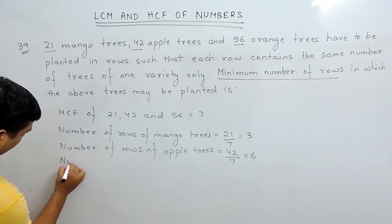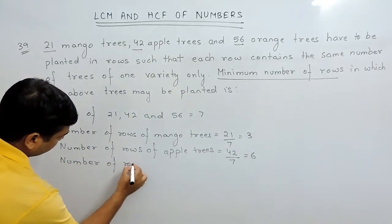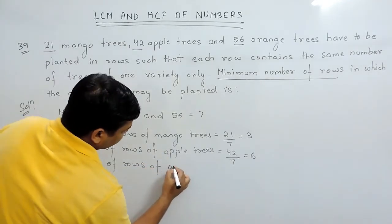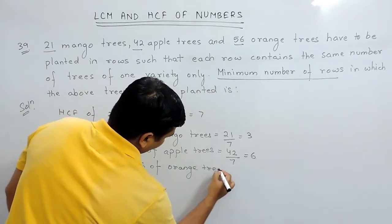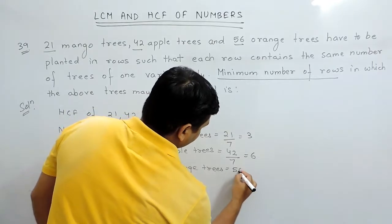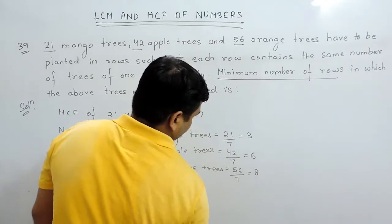Now, the number of rows of orange trees will be the total number of trees, that is 56, and trees planted in each row is 7. Therefore, 8 rows.